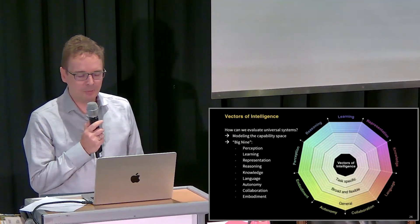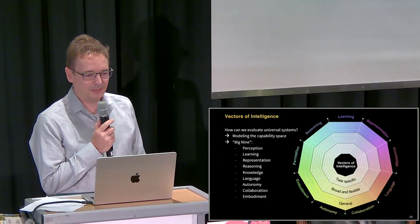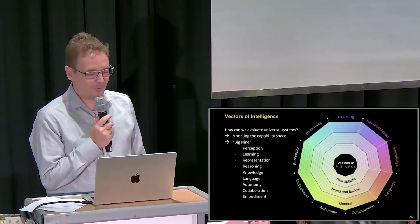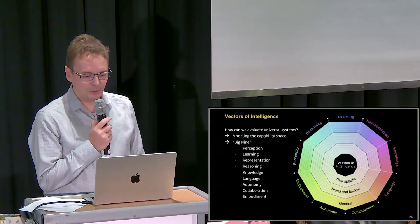And so we think about what capabilities exist at all and try to come up with the capability space. The model that we came up with was something that we informally called the Big Nine.